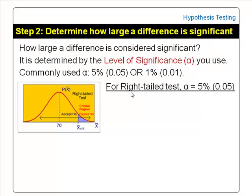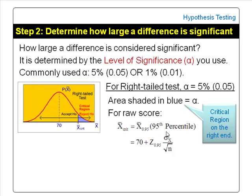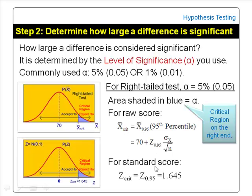In a right-tailed test with alpha equal to 5%, the area shaded in blue represents alpha. This is the critical region where we reject the null hypothesis if the sample mean is greater than or equal to X-bar critical. If the sample mean is less than X-bar critical, we accept the null hypothesis. The raw score X-bar critical is the 95th percentile of the sample means, given by the mean (70 kg) plus Z-0.95 times the standard error. Z-0.95 is the 95th percentile of the standard score, denoted by Z critical, with a value of 1.645.